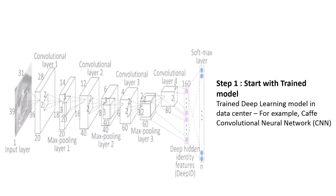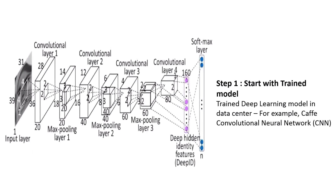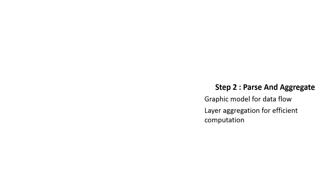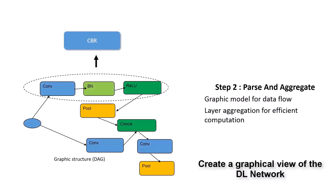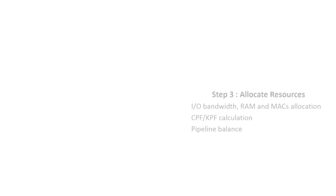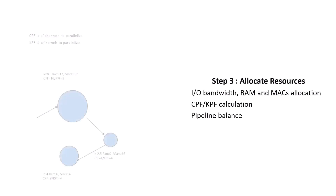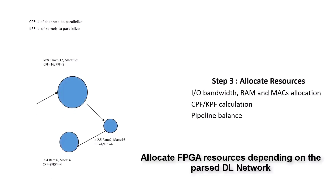The user inputs a trained model. Then, the technology analyzes the neural network, allocates computation and memory resources, adds control logic, and generates the FPGA files.